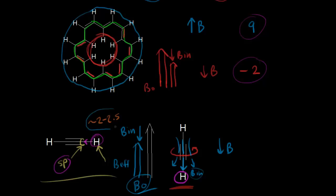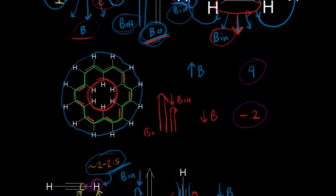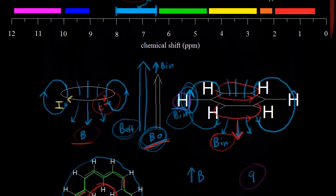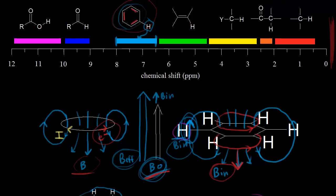That's how we explain the chemical shift of around 2.5 for a proton on a triple bond. This effect holds true any time you have pi electrons that can circulate when you put a molecule in an applied magnetic field — for example, a proton on a double bond, or a proton next to a carbonyl. Any time you have pi electrons, this effect can be present, and as we've seen, it can be a very powerful effect that really affects the chemical shift.